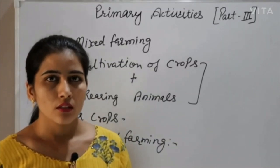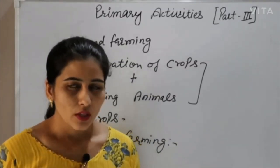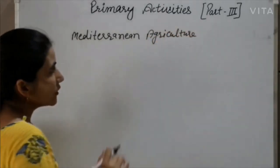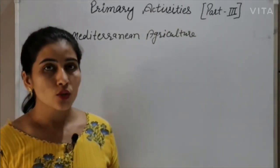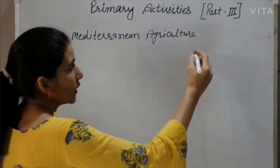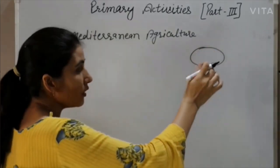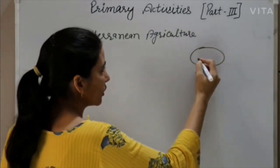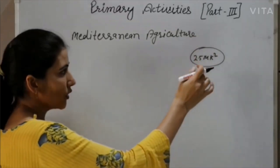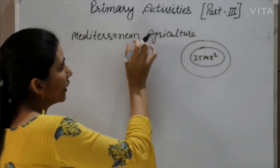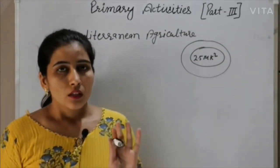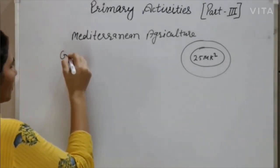Next, we discuss Mediterranean agriculture. As its name indicates, this type of agriculture is practiced on Mediterranean lands surrounding the Mediterranean Sea, which covers an area of 2.5 million square kilometers. The main emphasis of this type of agriculture is on citrus fruits like grapes.